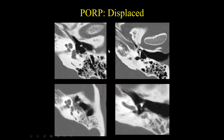Here are examples of displaced PORPs. In one case, the prosthesis intended to go from the tympanic membrane to the head of the stapes was unfortunately displaced. In another case, following resection for cholesteatoma, the prosthesis should be oriented attaching to the head of the stapes, but it has been displaced. These are two examples of displaced partial ossicular prostheses.